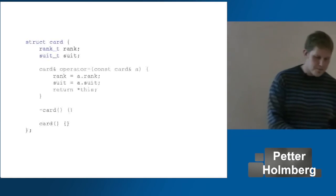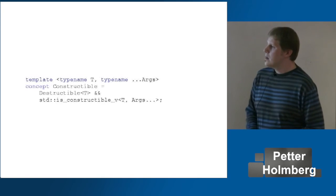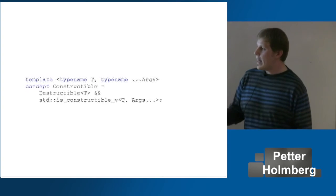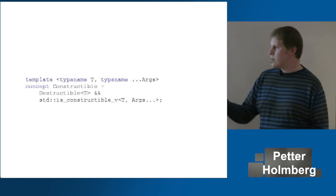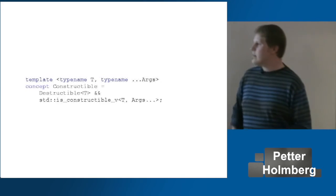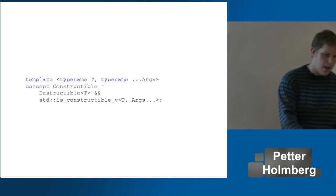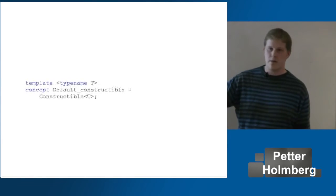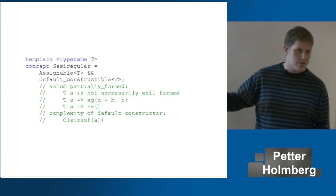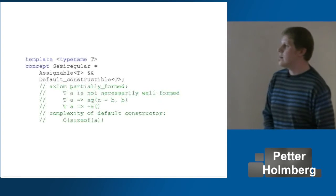To describe this concept, I'm going to need a helper concept to start with. 'Constructible' means that we are destructible, as already defined. For simplicity, we use another type trait: `std::is_constructible`. This is an example of a variadic type trait and a variadic concept — this would cover all constructors with any number of arguments. And using that, I can say 'default constructible' is constructible with no arguments. So a semi-regular type is assignable and default constructible.